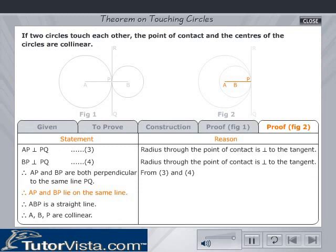Therefore, AP and BP lie on the same line. Therefore, ABP is a straight line. Hence, points A, B and P are collinear. Thus, the theorem is proved.